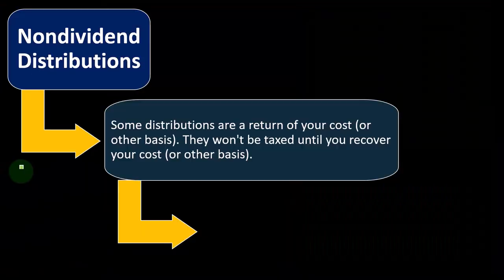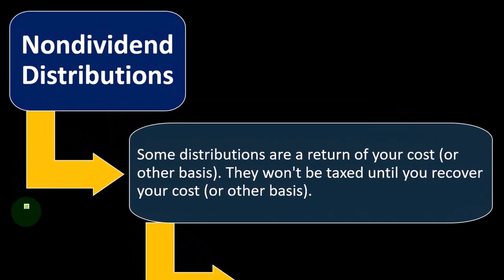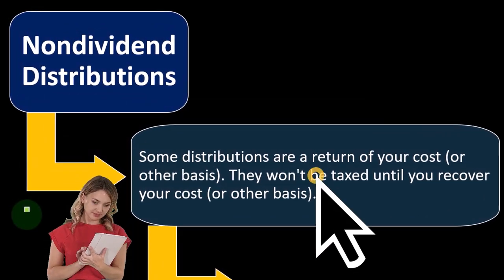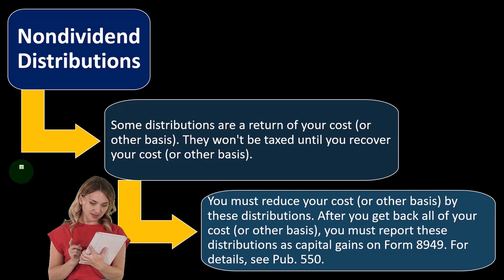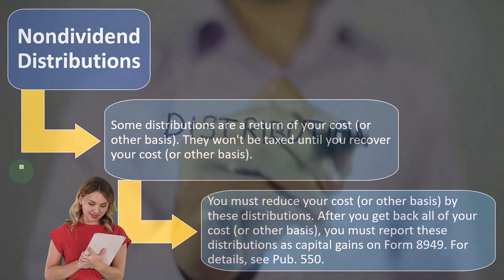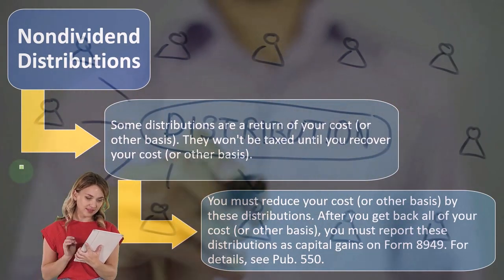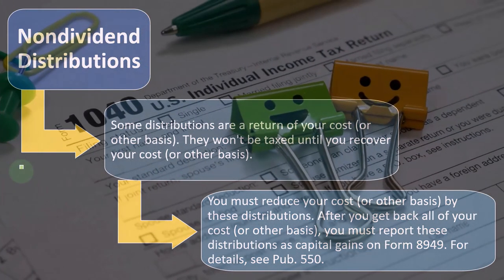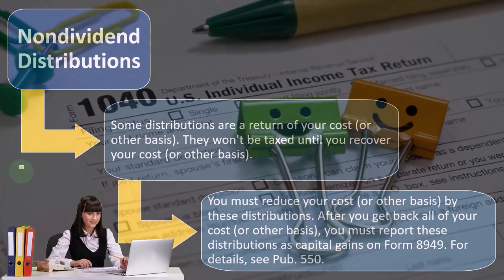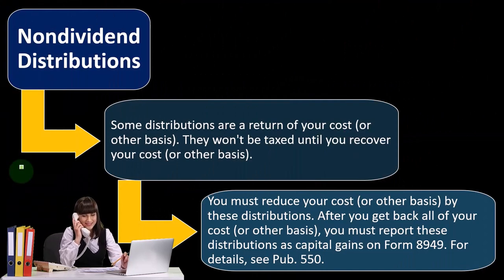Non-dividend distributions: some distributions are a return of your cost or other basis. They won't be taxed until you recover your cost or other basis. You must reduce your cost or other basis by these distributions. After you get back all of your cost or other basis, you must report these distributions as capital gains on Form 8949. See Publication 550. This is where you might see something on that 1099-DIV under capital gain distributions.